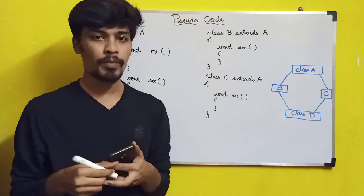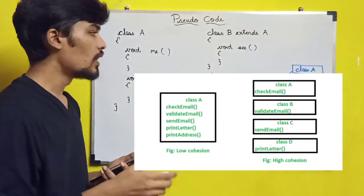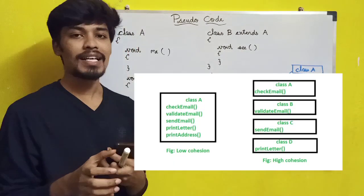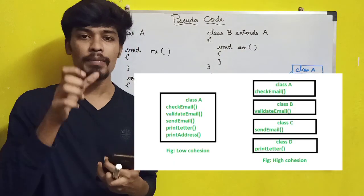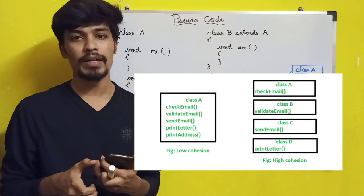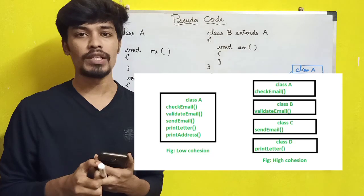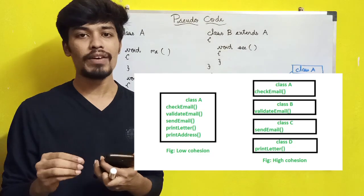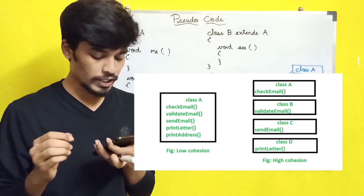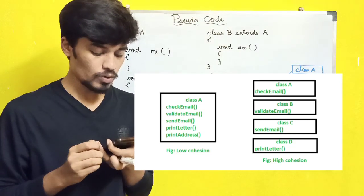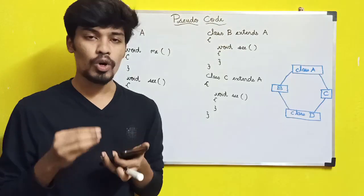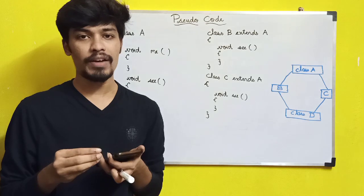The cohesion problem is different — that is when you can't separate all methods within a class properly. Next one is the coherence problem.